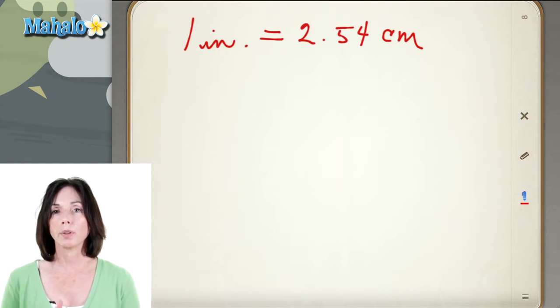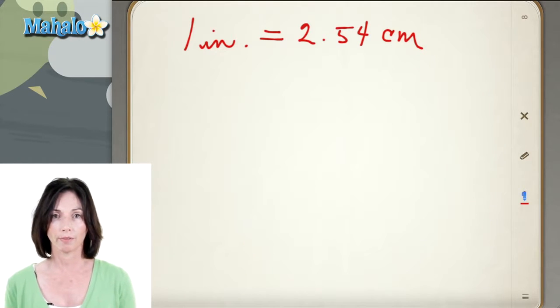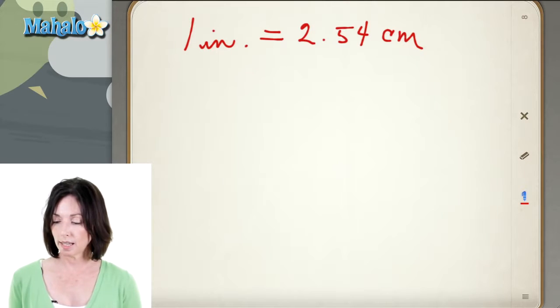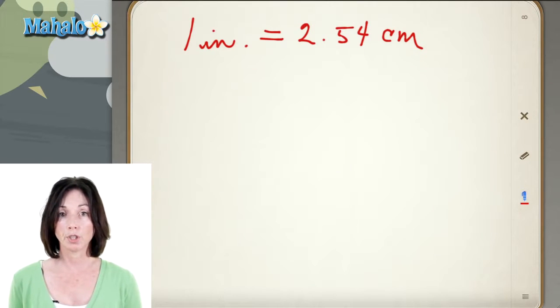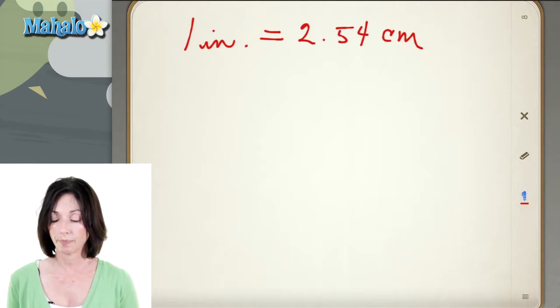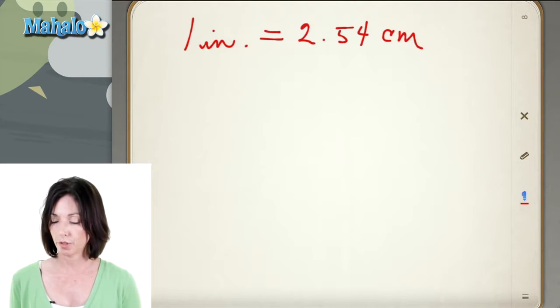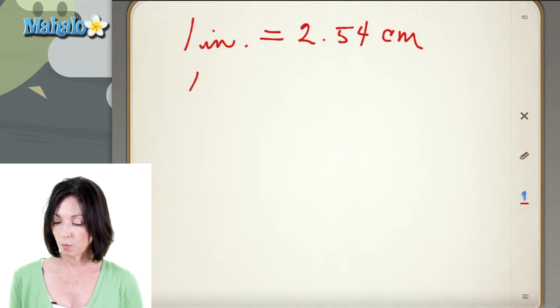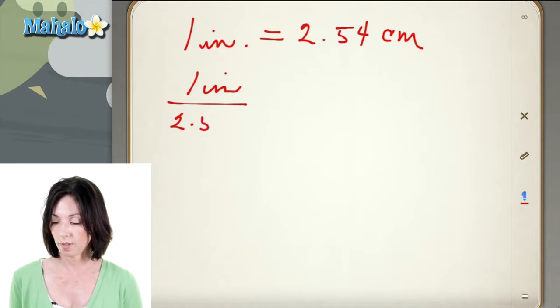So what we're going to do is make this a proportion and then make a little proportion equation and figure it out. So let's say I want to convert 2 inches into centimeters. Well on one side of the equation I'm going to have my conversion factor. So for every 1 inch I have 2.54 centimeters.